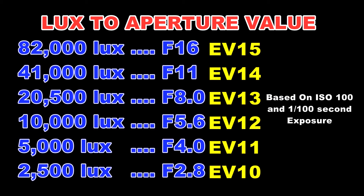When you consider the light output from one of these panels is just under 5,000 lux, it puts it into context. Starting at 82,000 lux at f/16, if we halve the light we open the aperture to f/11, giving 40,000 lux. Opening further to f/8 gives 20,000 lux. Reducing by half again gives f/5.6, and reducing again by half we end up with 5,000 lux at f/4.